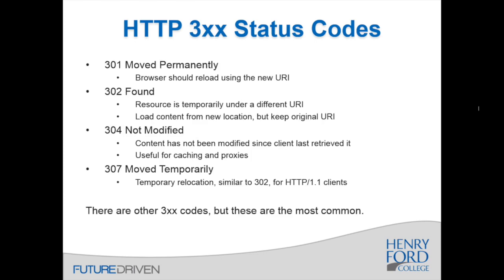300-level status codes deal with redirection. A very common code is 301, moved permanently — if you change a URI and want people to still reach the resource at its new location, you set up a 301 permanent redirect. 302 found is similar, but the resource has moved temporarily; the client should try again from the original address next time, as it's not a permanent change.